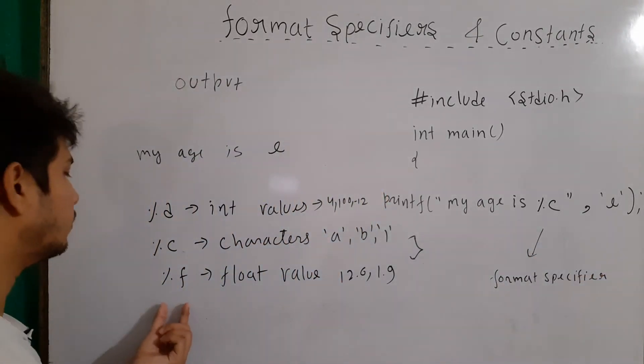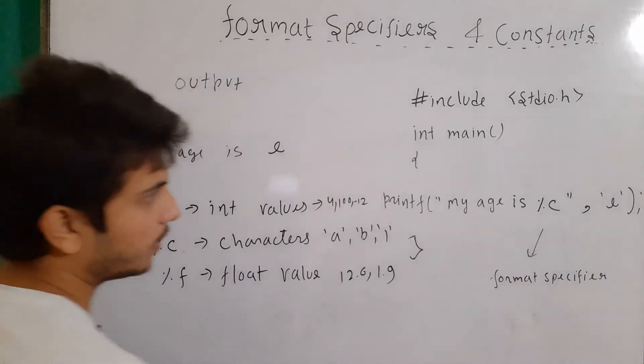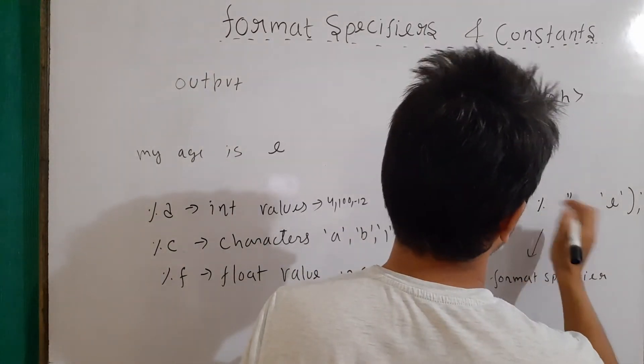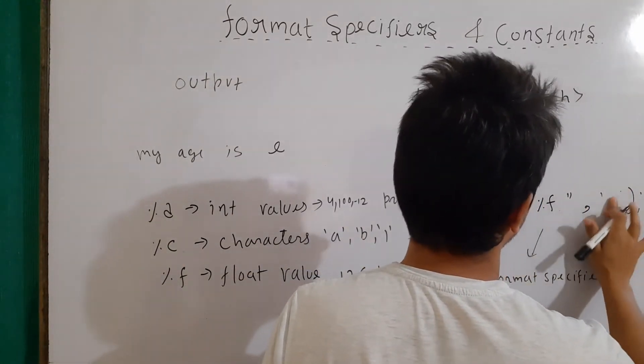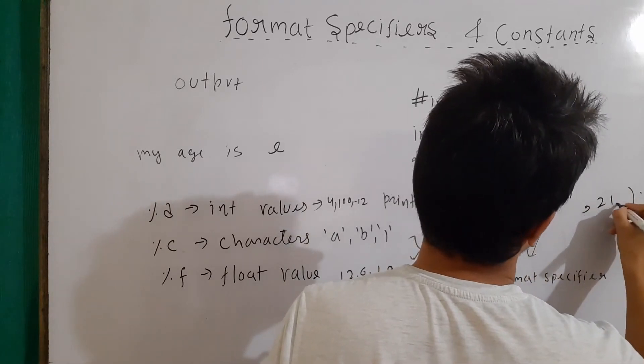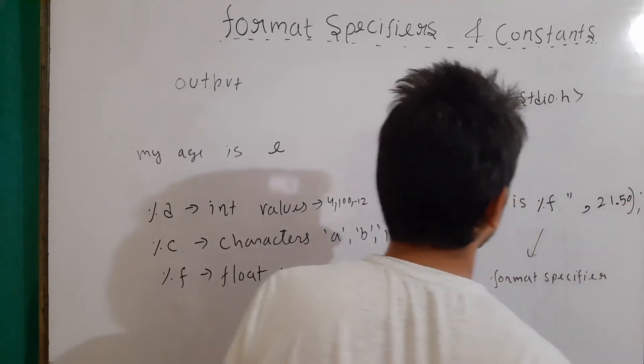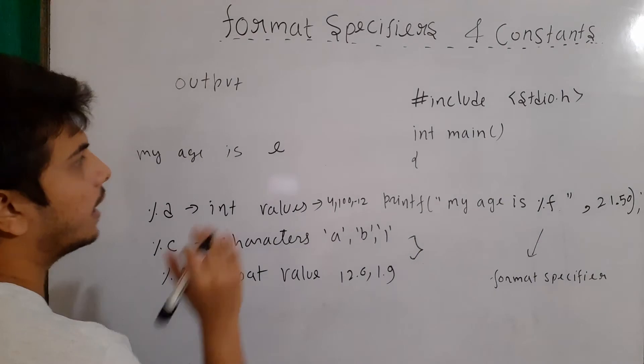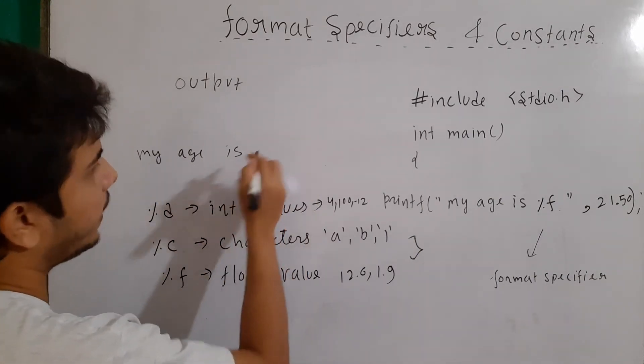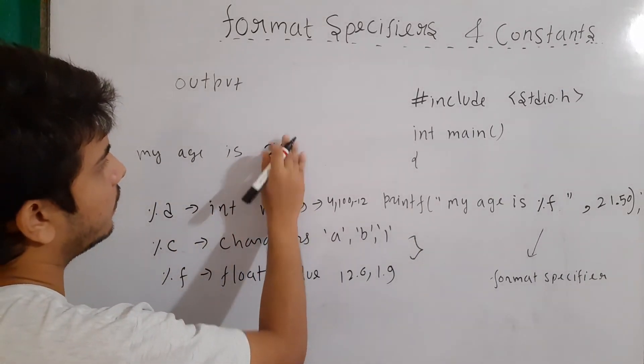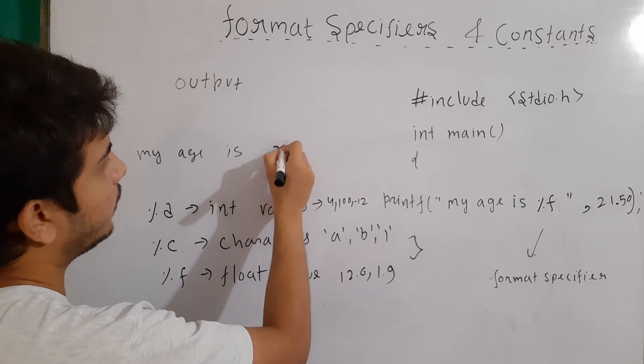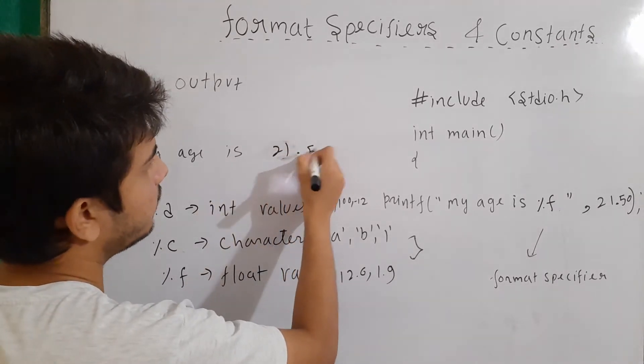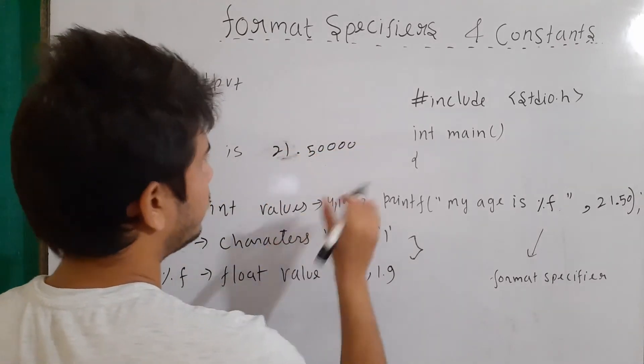And if we want to use %f, now %f will be used for floating values. So I'll write here %f and here let's say I'll write here 21.50. So in our output, it will give us my age is 21.50 and some other zeros also.